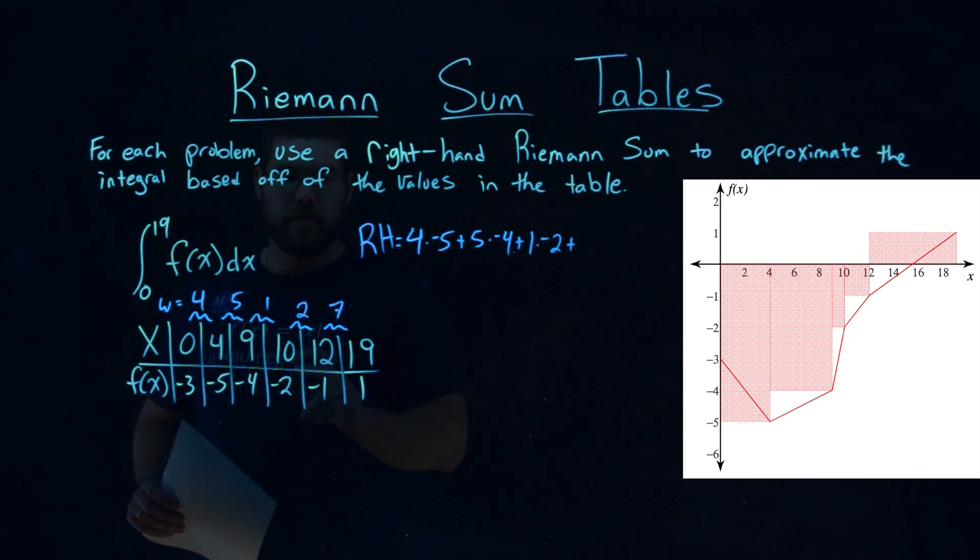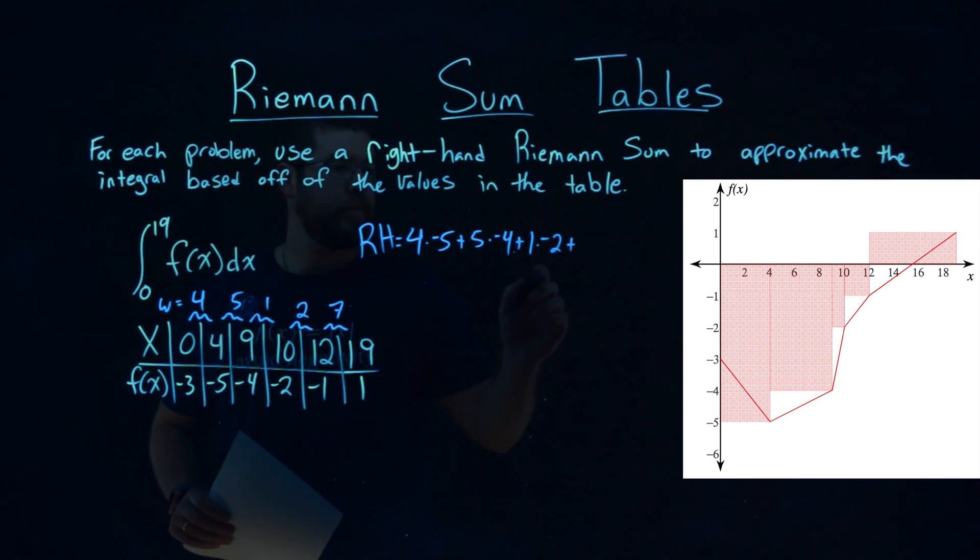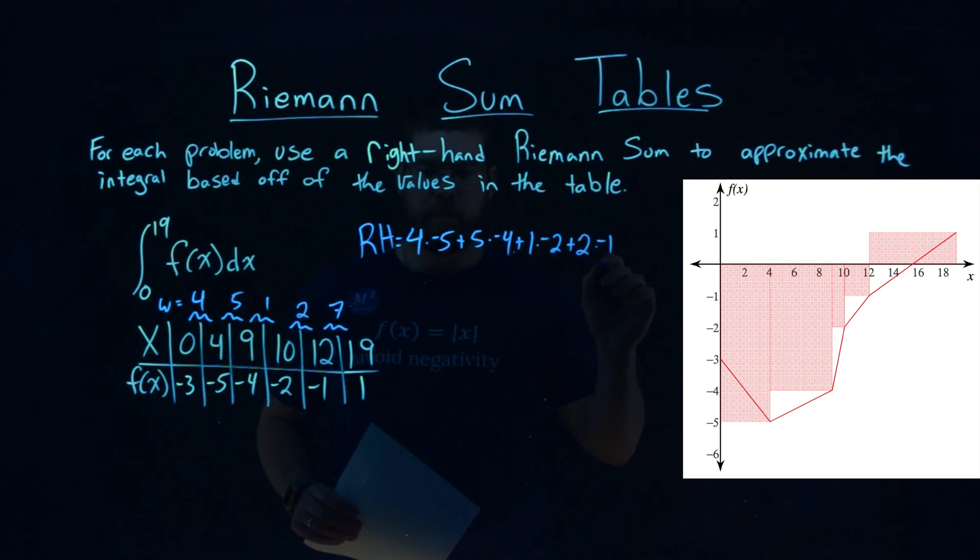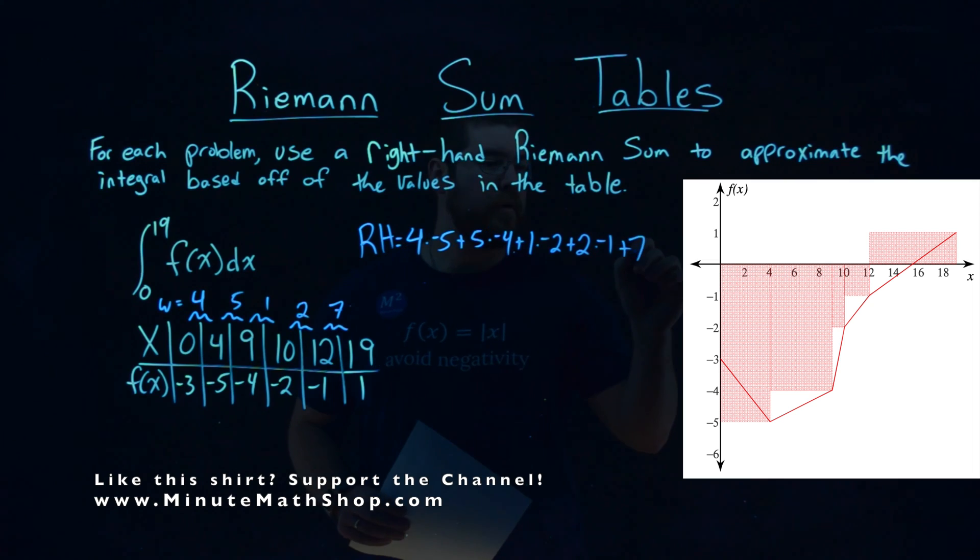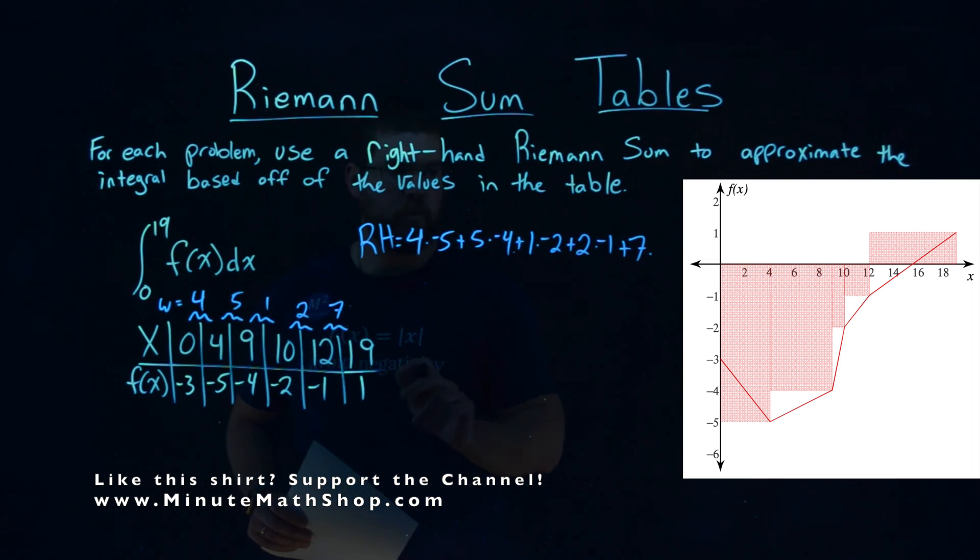plus 2, the next width, multiply its height, negative 1, plus lastly, the width of 7, a large one here, multiplied by its height, just a positive 1.